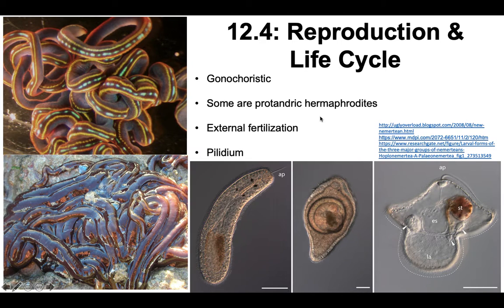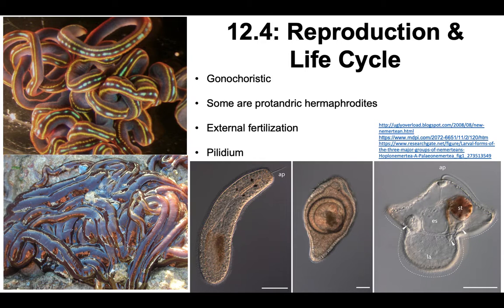They'll have serially repeated gonads and external fertilization — different from many annelid groups that have internal fertilization. They release gametes by rupturing through their body wall, or sometimes through temporary ducts. Sometimes they'll mate in a writhing mass, secreting mucus to protect their gametes during external fertilization — similar to what we discussed for hirudinids, the leeches. But sometimes they'll just release their gametes directly into the water.